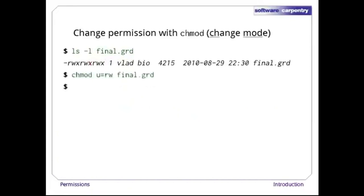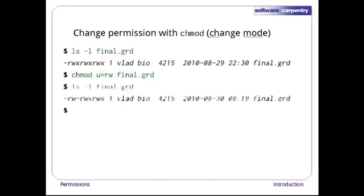Here's the command to change the owner's permissions to rw. The 'u' signals that we're changing the privileges of the user, i.e., the file's owner, and rw is the new set of permissions. A quick ls -l shows us that it worked.